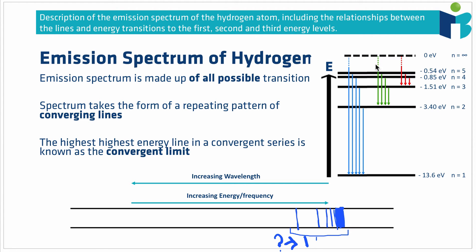We also need to consider the transitions shown in green that go down to n equals 2. The pattern here — transitions of progressively smaller energies — is very similar to the blue series, but all of these transitions are much lower in energy, with shorter arrows. This means we get the same kind of convergent series occurring for transitions down to n equals 2, but at lower energies. We get the same pattern where lines get closer and closer together, occurring at lower energy than the previous series.